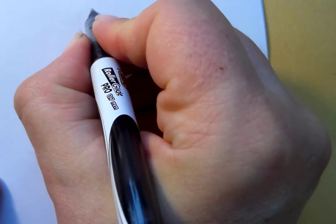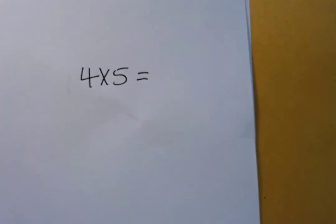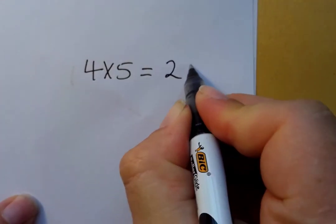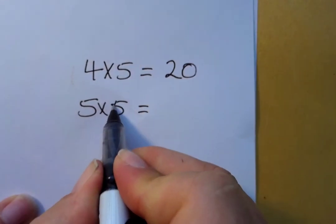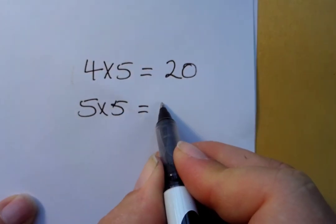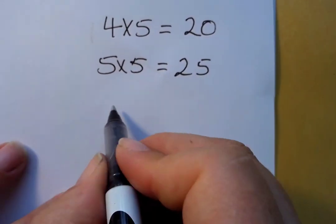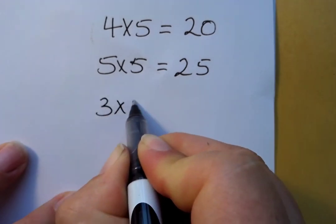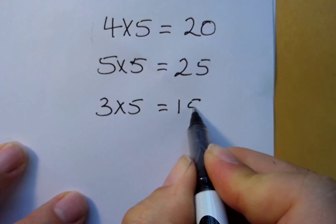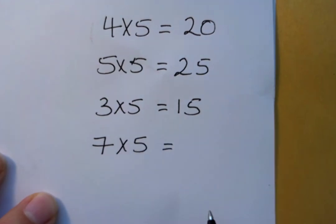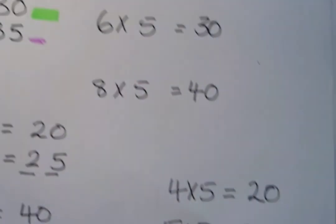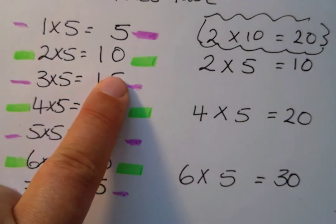Let's give you some practice. What is four times five? Four times five is twenty. What about five times five? Five times five is twenty-five. Three times five? Fifteen. Seven times five? Thirty-five.